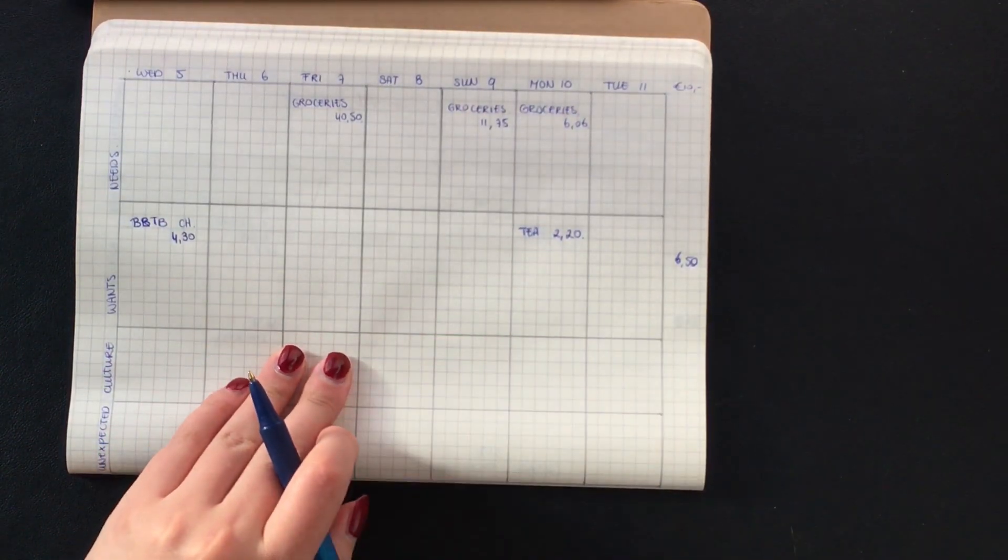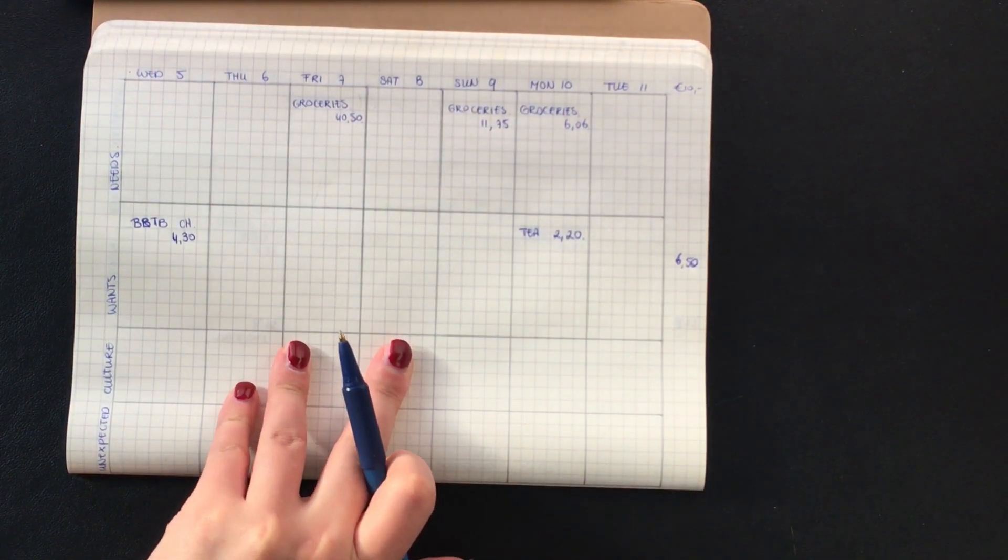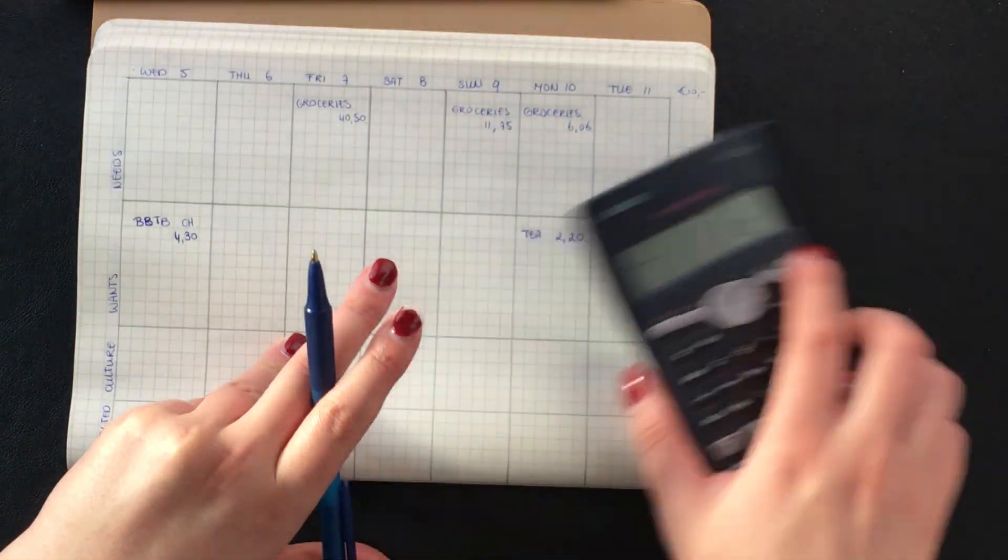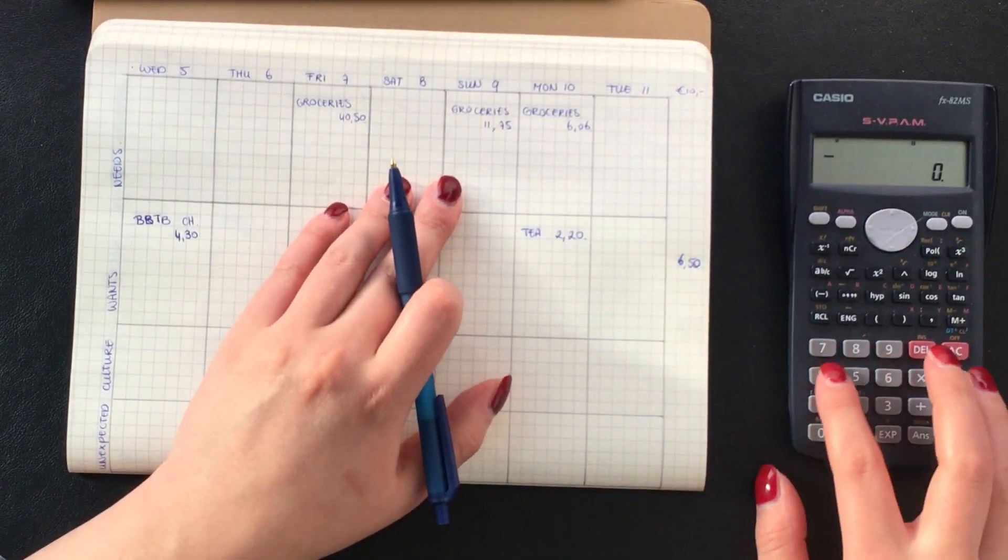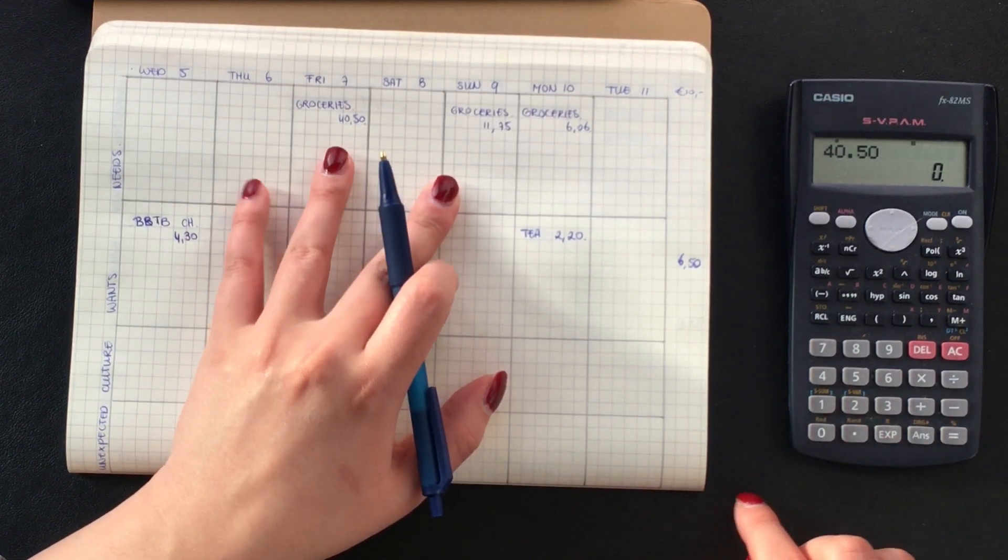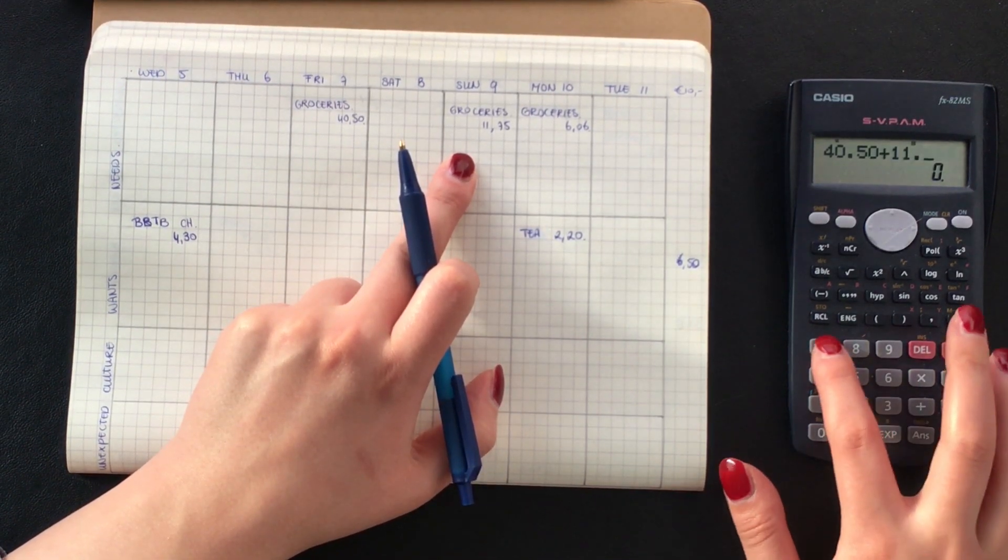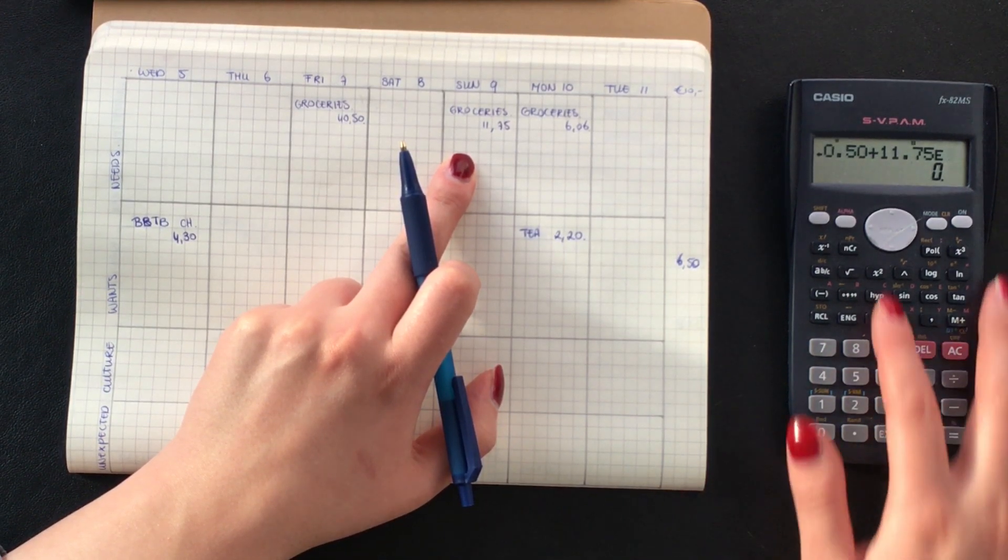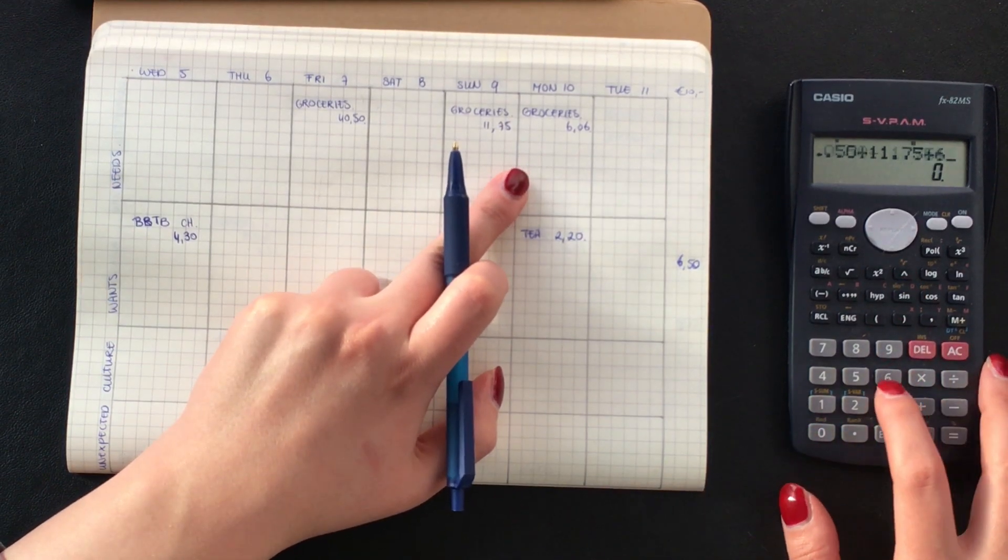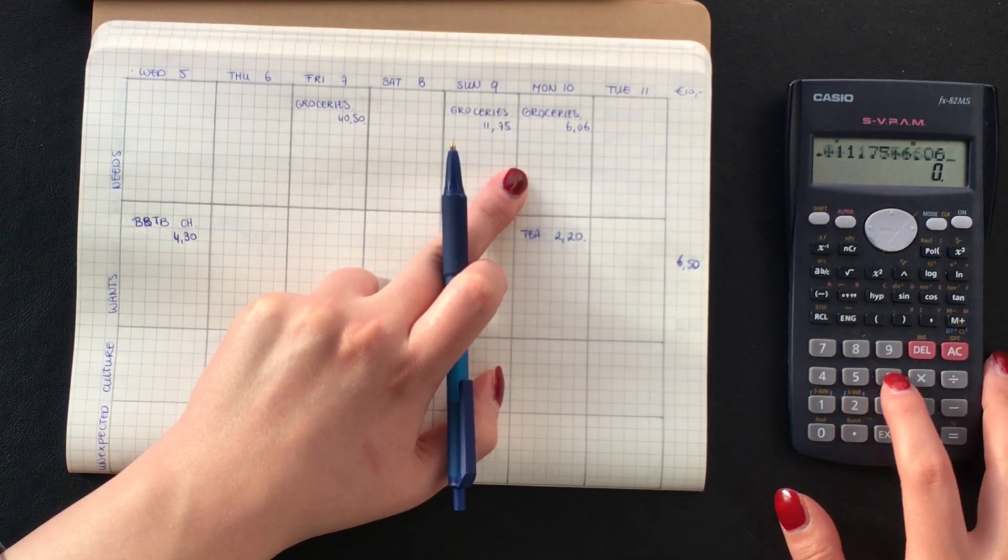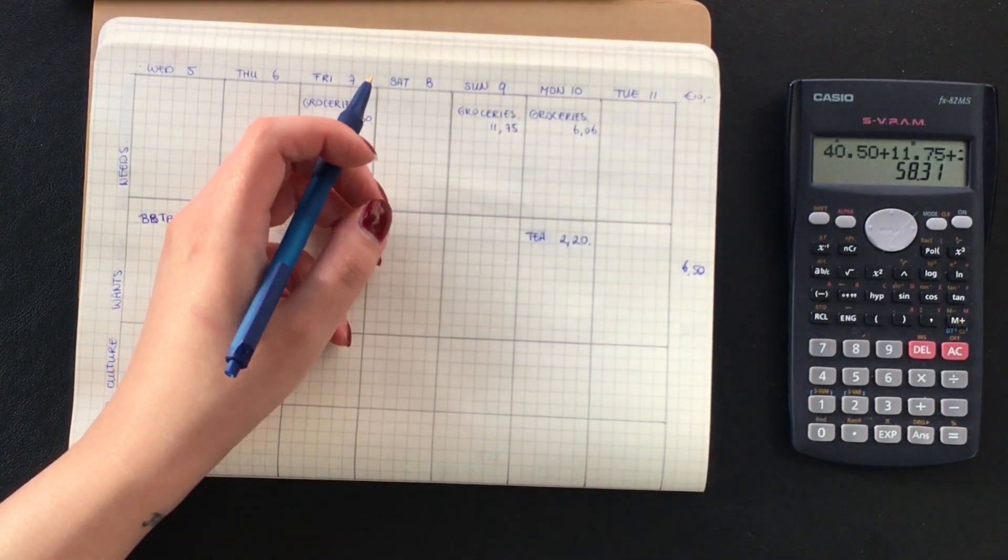That means that I was under budget for my spending. However for my groceries I went way over budget. So let's calculate how much I went in total. We have 40.50 and then we add 11.75 and 6.06, which is double my budget that I usually have. I usually have 30 euros each week.